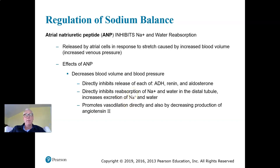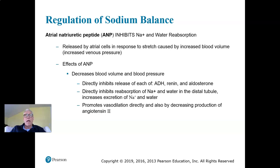Atrial natriuretic peptide is the limiter for aldosterone function and sodium reabsorption. ANP is released by cells in the atria of the heart when they become stretched by increases in blood volume and venous pressure. It's important to be careful here: the atria never experience arterial blood pressure — they experience the pressure of venous return. So it's increases in blood volume that increase venous return, stretch the atria, and cause ANP release.